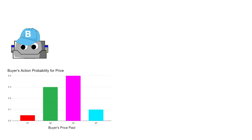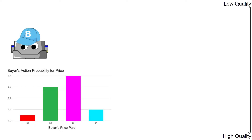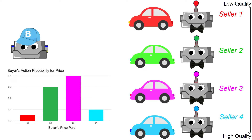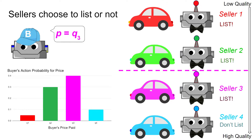Let's say the buyer does have this action probability. We're going to instantiate some sellers from lowest quality at the top to highest quality at the bottom. Let's say we have these four sellers and their cars. The first step is that the buyer proposes a price — let's say the buyer makes the move of Q3. Thus, the price the buyer is willing to pay is in between the values for seller 2 and seller 3. The sellers simultaneously choose whether they want to list their car or not. Let's say that the first three, the lowest value sellers, list their car, whereas the highest value seller does not list his car.